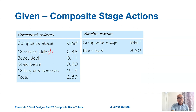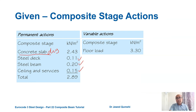At composite stage, dry concrete weight is 2.3 kN/m², plus steel deck, steel beam, ceiling and services as permanent actions. The variable action (occupancy load) is 3.3 kN/m² for typical offices, with a variable action of 3.0 kN/m².